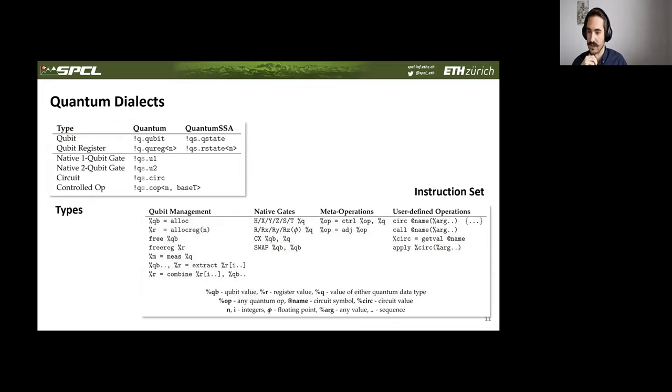In contrast, in the optimization dialect, we use value semantics. So we have a form of quantum SSA. Here, every operation consumes a quantum state value and produces a new quantum state. What this does is that the operations are now linked in the SSA graph by this use-def chain. So this is the structure of these quantum dialects that we designed. We have some data types for qubits and qubit registers, and also data types for quantum operations, which allows us to treat these operations as first-class objects.